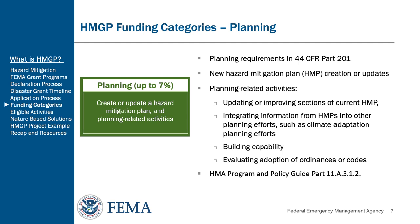Under the planning category, activities are funded to develop state, tribal, and local mitigation plans that meet the planning requirements outlined in 44 CFR Part 201. Up to 7% of an applicant's HMGP ceiling may be used for creating a new hazard mitigation plan (HMP), updating a previous HMP, and planning-related activities. Planning activities can include updating or improving sections of the current hazard mitigation plan, integrating information from hazard mitigation plans into other planning efforts such as climate adaptation planning, building capability, and evaluating adoption of ordinances or codes. Applicants and sub-applicants should refer to the 2023 HMA Program and Policy Guide Part 11A.3.1.2 for more information on eligible planning-related efforts.